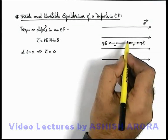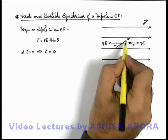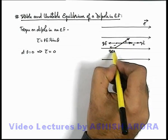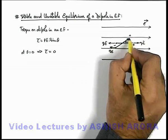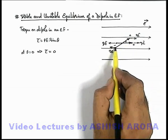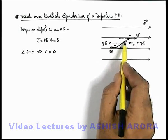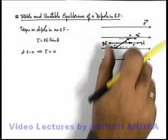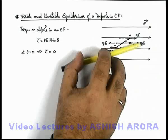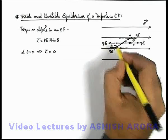Now if we slightly rotate the dipole — say we tilt it by an angle θ in an anticlockwise fashion — the negative end will experience a force qE in the leftward direction and the positive end will experience a force qE in the rightward direction. These two lines of action of qE are not along the same line and will exert a couple on the dipole. This torque will have a tendency to rotate it in a clockwise manner — meaning if we rotate the dipole anticlockwise, it experiences a torque in the clockwise direction.